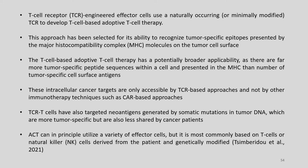TCR-T cell-based adoptive therapy has a potentially broader applicability as there are far more tumor-specific peptide sequences within a cell presented in an MHC than the number of tumor-specific cell surface antigens. These intracellular cancer targets are only accessible by TCR-based approaches and not by other immunotherapy techniques such as CAR-based approaches. TCR-T cells have also targeted neoantigens generated by somatic mutations in tumor DNA, which are more tumor-specific but also less shared among cancer patients. ACT can in principle utilize a variety of effector cells but is most commonly based on T cells or natural killer cells derived from the patient and genetically modified.